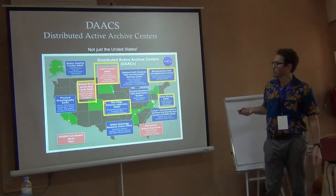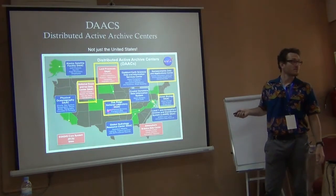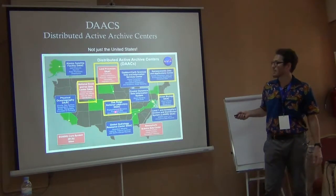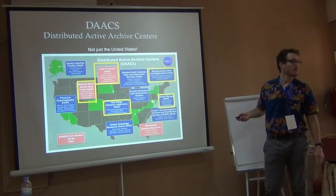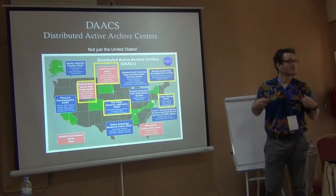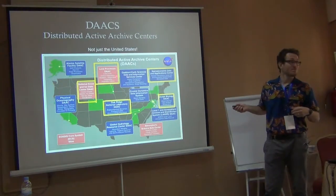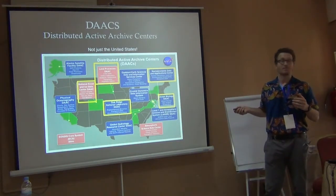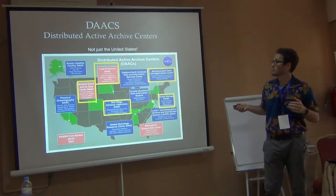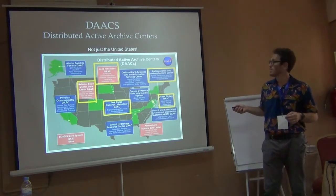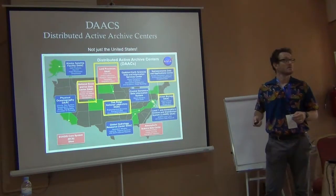One of them is the Oak Ridge National Laboratory, which is very close to where I live and work. This has biogeochemical dynamics, ecological data, and environmental processes — so that sounds like some of the work we're doing. We also have the Land Processes DAC, which might be the biggest one. This is where you'll find a lot of your land cover data: land cover, surface reflectance, radiance, temperature, topography — that's the DEM, the digital elevation model — and vegetation indices.